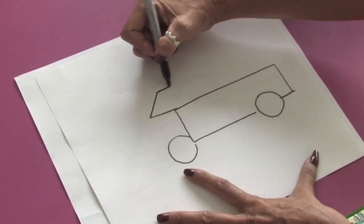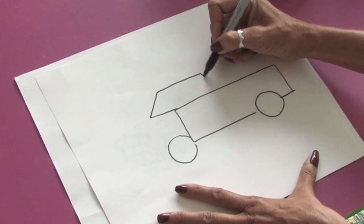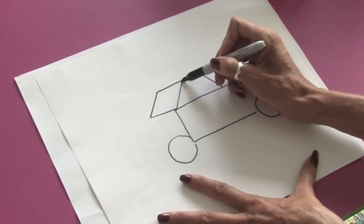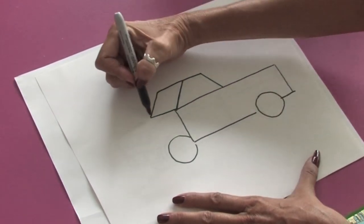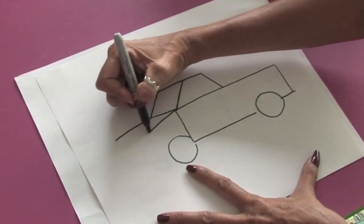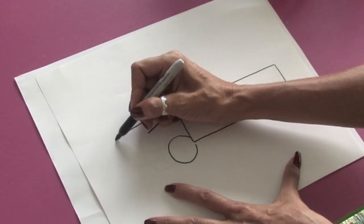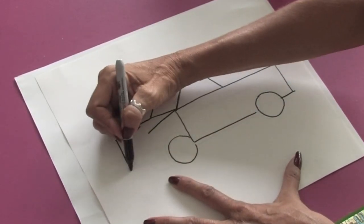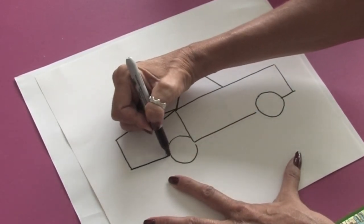I'm going to draw another basic shape up here for the cab of the truck, and a line going up, then a line coming down, and another line coming down here to the hood. And just one more line coming back to the tires.